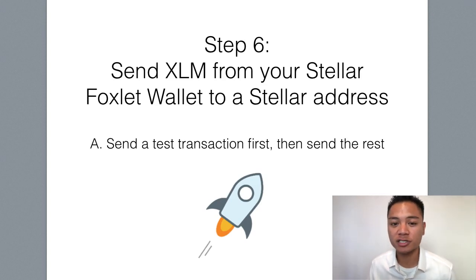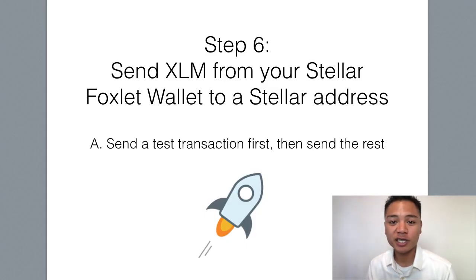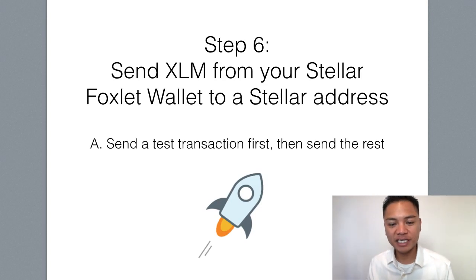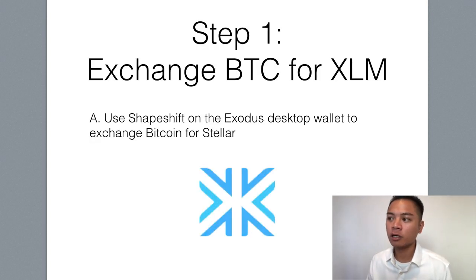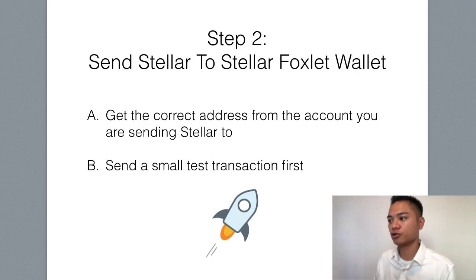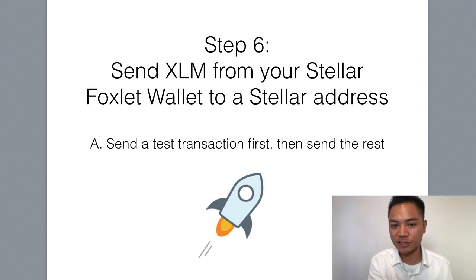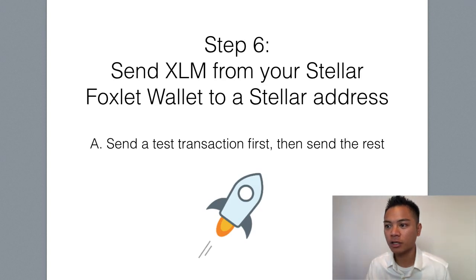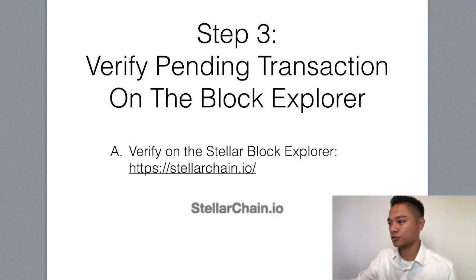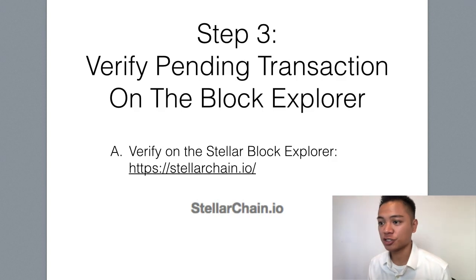The Stellar address we used for this video was the one from my Exodus account. In this video, I'm not talking about how to receive Stellar using your Foxlet wallet — I'll save that for the next video. But in this video, I showed you step number one: how to exchange Bitcoin for Stellar. Then I showed you how to send Stellar to a Foxlet wallet. And then step number six, which was to send Stellar from our Foxlet wallet to a Stellar address. Those are the key highlights, along with how to verify these transactions on the Block Explorer.